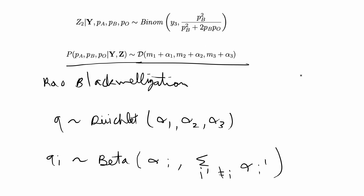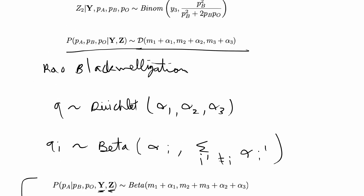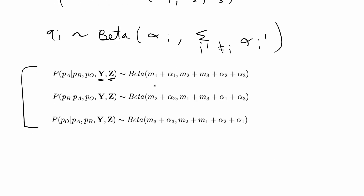For this example that gives us three equations. The marginal of PA conditioned on everything is Beta(m1 + alpha1, m2 + m3 + alpha2 + alpha3). So if PA is the parameter of interest, m1 + alpha1 is the first Beta parameter and the sum of everything else is the second parameter. For PB, the first parameter is m2 + alpha2 and the second is the sum of everything else. The same structure applies for PO.